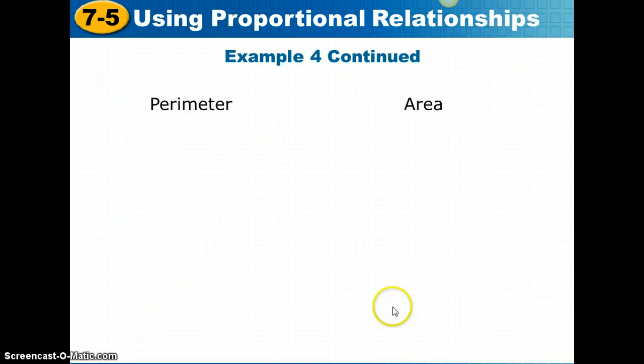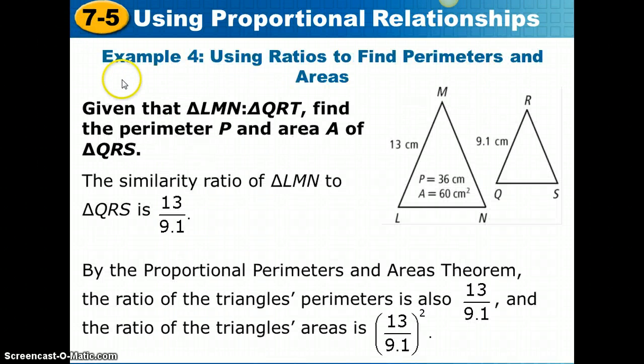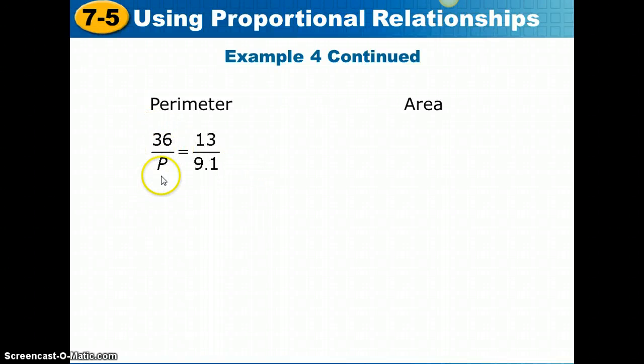First let's find the perimeter. We're going to set up the proportion that 36 over our unknown perimeter P must equal 13 over 9.1. I'm going to give you a moment to solve this. Cross multiply and then solve for P. Pause the video if you need more time. We should get 13P equals 36 times 9.1. So P is 25.2.